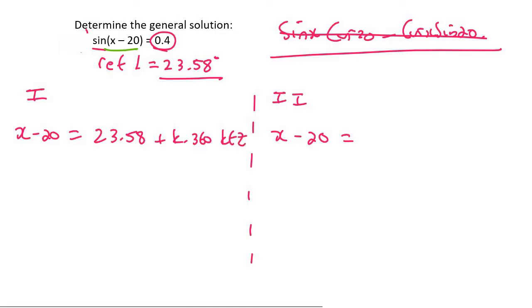If your teacher or at your school they use n here, then just use n. It doesn't really matter. It's just a letter. So please do whatever's comfortable for you. And then in quadrant 2, we know that that's the 180 minus quadrant. So we're going to say 180 minus the reference angle, then plus k times 360, and k as an element of z.